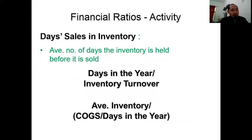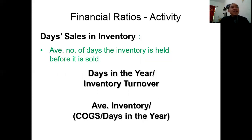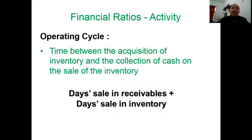Days sales in inventory is the average number of days the inventory is held before it is sold. The formula is: days in the year divided by inventory turnover. Alternatively, inventory turnover can be expressed as average inventory divided by cost of goods sold, multiplied by days in the year. Feel free to go back or screenshot the formulas.